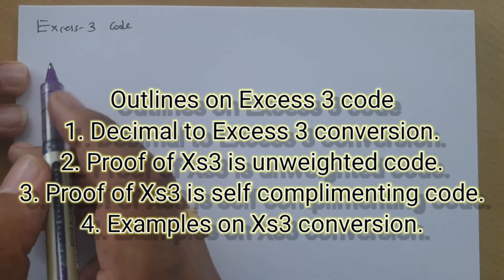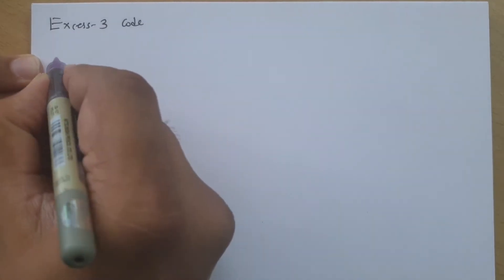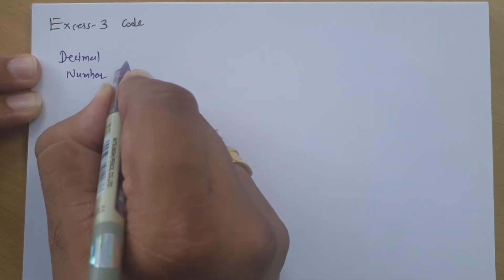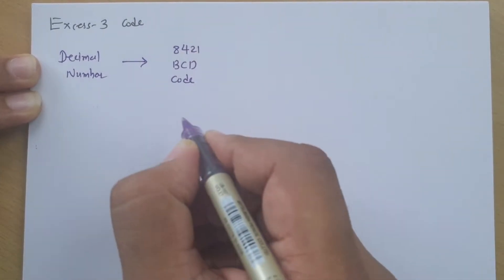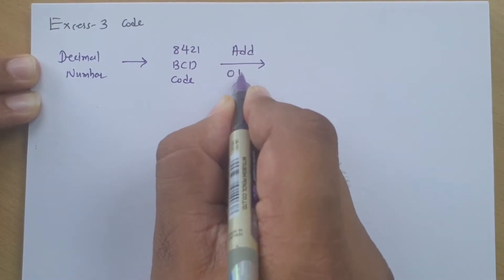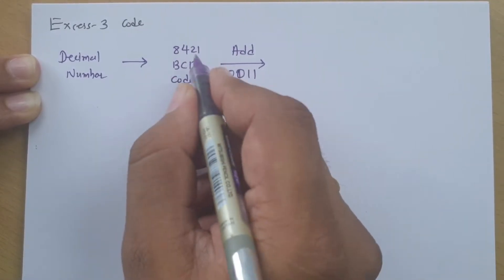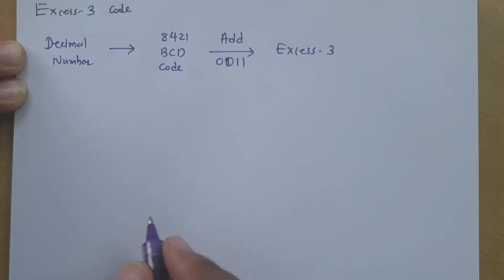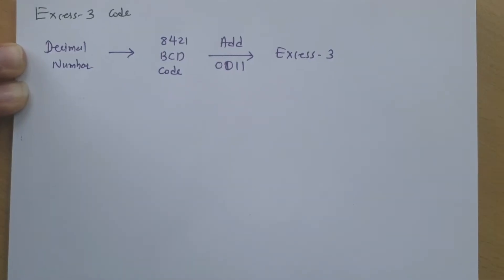Let us begin with the first agenda: basic conversion of a decimal number into Excess-3 code. If a decimal number is given, we first represent it in 8421 BCD code. Once we have the 8421 BCD code, we add 0011 (which is 3) to it, and we obtain the Excess-3 code. This is the basic simple process to generate Excess-3 code.